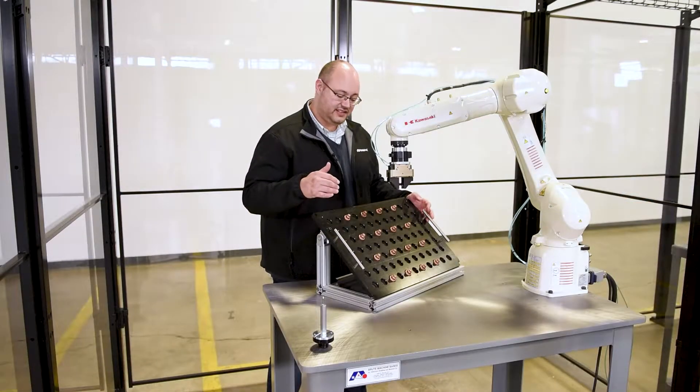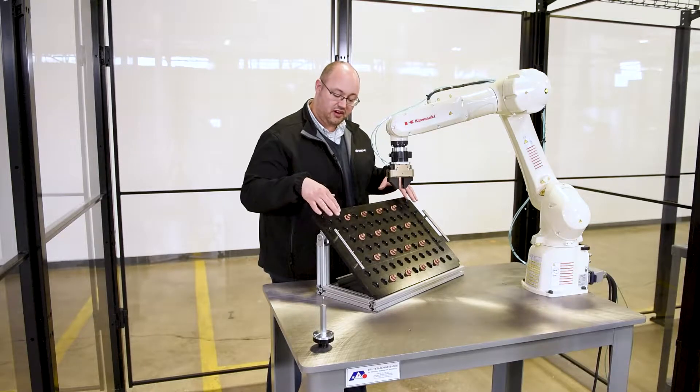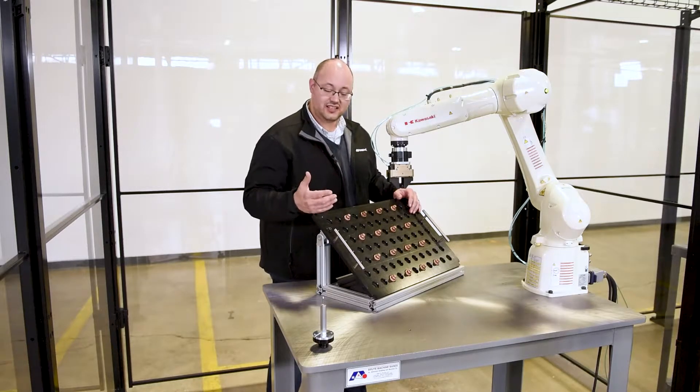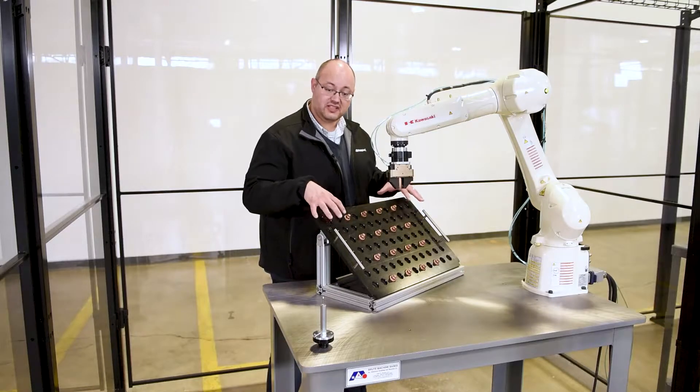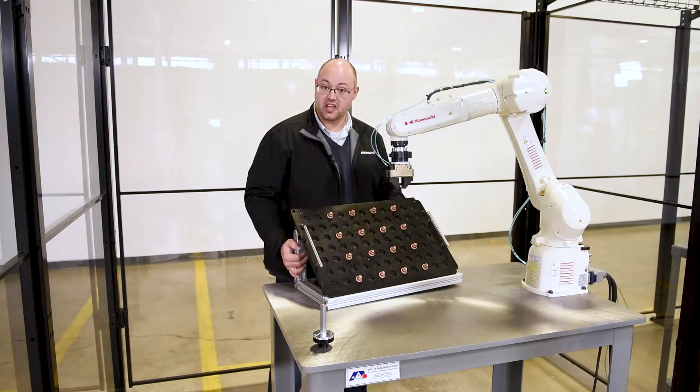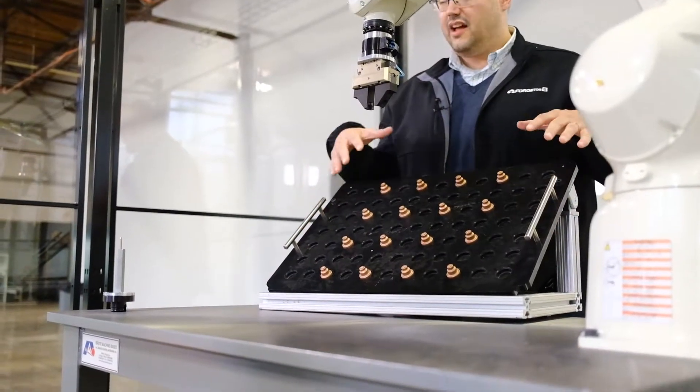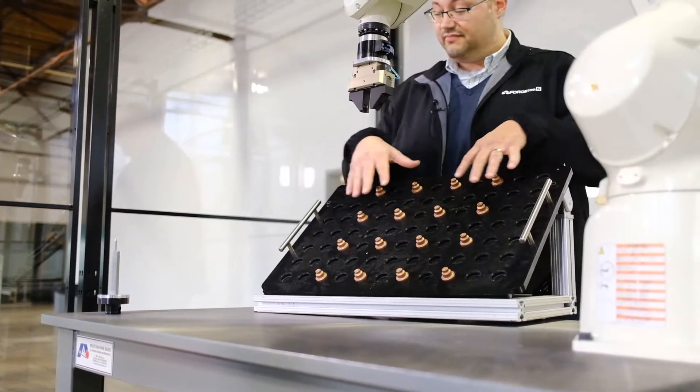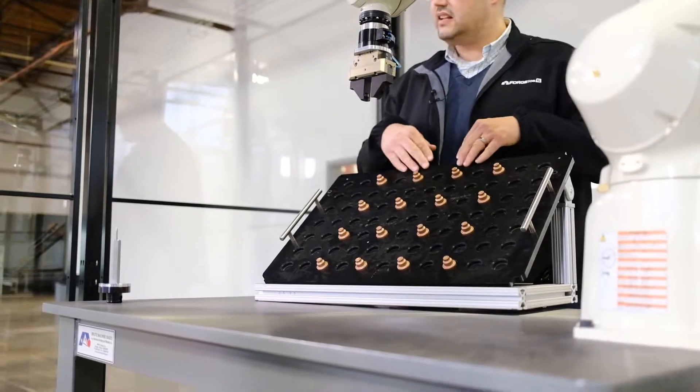We've seen that the robot has successfully been able to interact with the parts on this surface. But let's say that process constraints require us to change the position of this tray. Now the robot is no longer able to interact with the parts because it's not aligned to the surface.